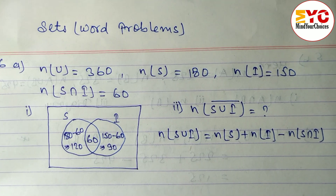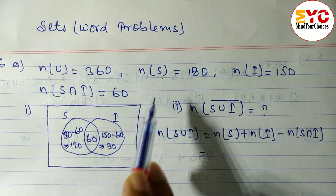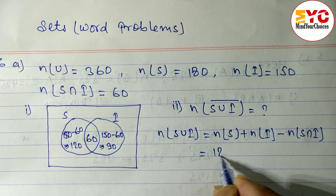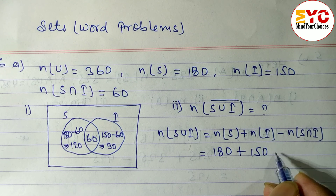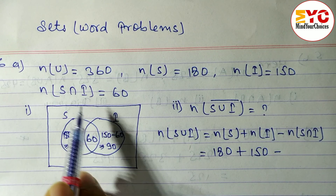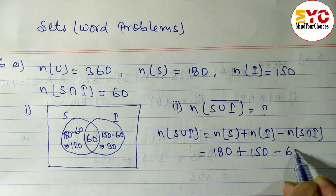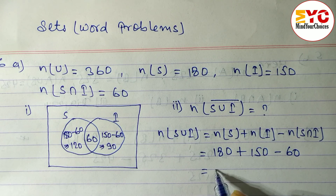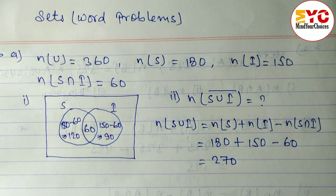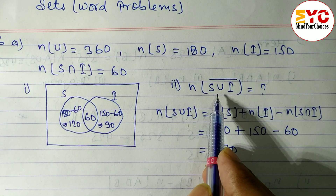The formula for n(S∪I) is: n(S) + n(I) − n(S∩I). n(S) = 180, n(I) = 150, n(S∩I) = 60. So n(S∪I) = 180 + 150 − 60 = 270. Therefore n(S∪I) = 270.